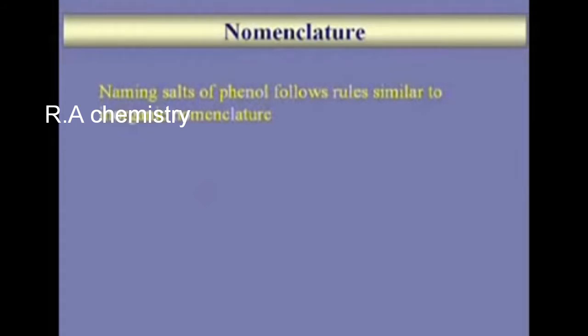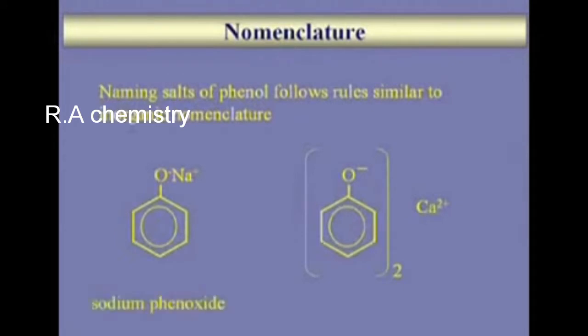Naming the salts of phenols follows rules very similar to inorganic nomenclature. This for example is sodium phenoxide. And this one is calcium phenoxide. You are naming them almost as if they were binaries.